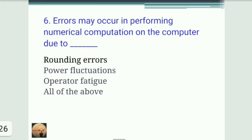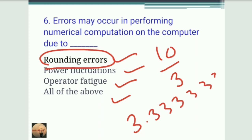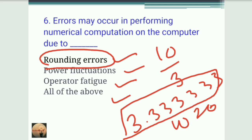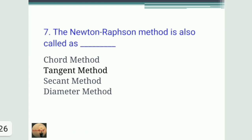Next question: errors may occur in numerical computations on a computer due to rounding errors, power fluctuation, operator fatigue, or all of the above. In computers, numerical errors arise from rounding — for example, 10/3 = 3.3333... repeating, but the computer has a digit limit and must round off. So the answer is rounding error.